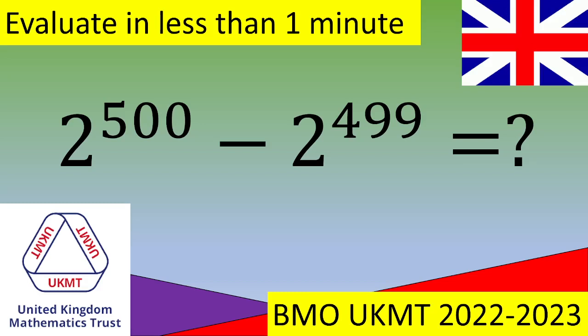Hello and welcome. In this video we have an exercise from the British Mathematics Olympiad. You need to evaluate the quantity 2 to the power of 500 minus 2 to the power of 499, and you need to do that in less than one minute. If you know how to do that, give it a try and pause the video, otherwise let's see the solution.